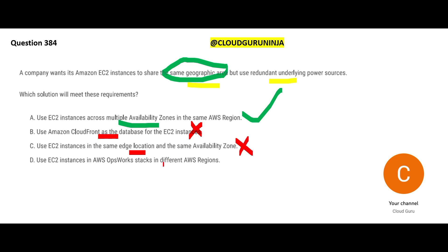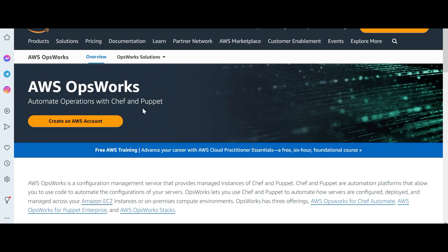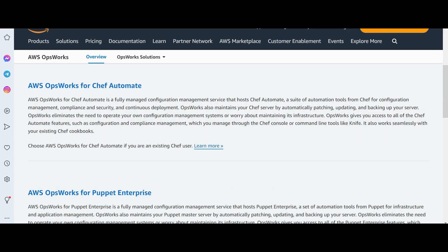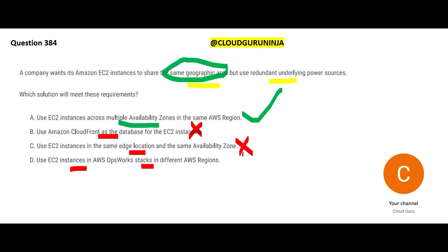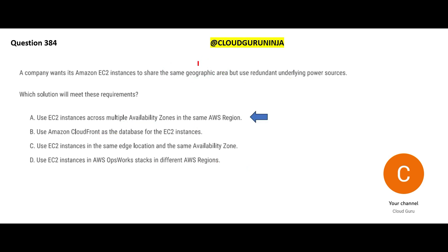Option D says EC2 instances in AWS OpsWorks in different regions. OpsWorks uses services like Chef and Puppet and is primarily used for automation - helping you automate your operations. For example, it can create EC2 instances and automate complex configuration pieces through Chef and Puppet. But OpsWorks is purely an automation solution, and this question is not talking about automation at all. So that's out of context, and option A - multiple AZs in the same region - would be our final answer.